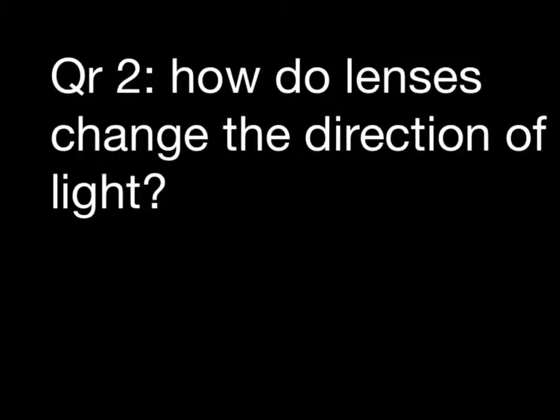Well done, you've made it to video number two. How do lenses change the direction of light? In the last video we looked at refraction. Lenses are pieces of glass, transparent plastic, or even organic materials like the lens in your eye. And they are shaped to control the way light travels through them by using refraction. We're going to learn about that now.